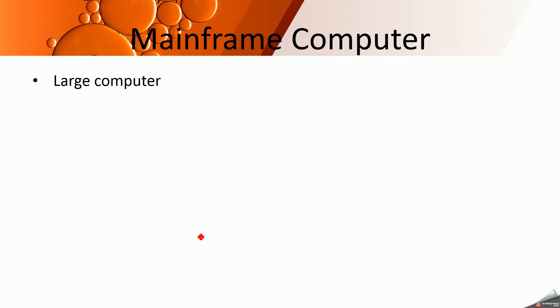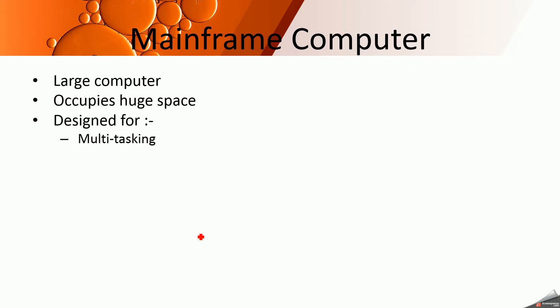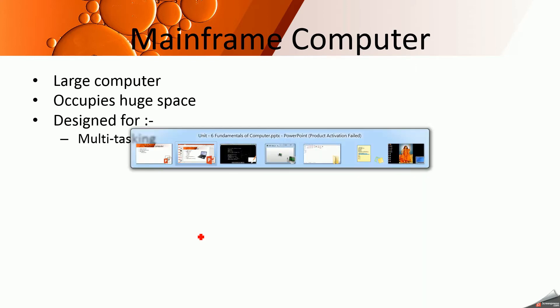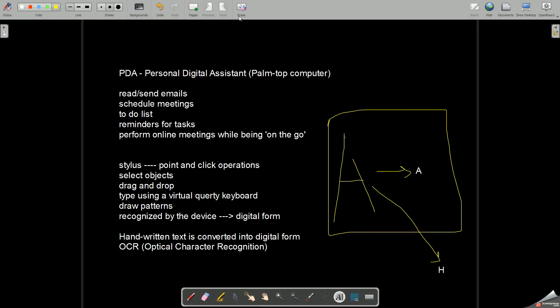The next type is a mainframe computer, which is a very large computer occupying a huge space — equivalent to that of a large warehouse or go-down. It is designed for multitasking, that is multiple people working on the same computer simultaneously. These devices are very large and are used as servers.